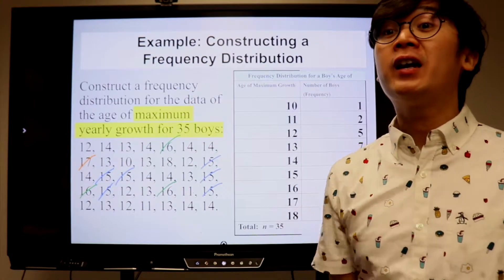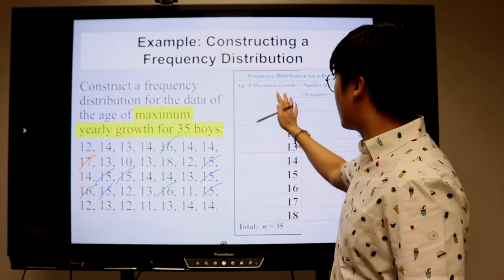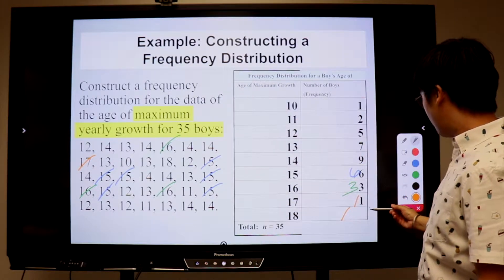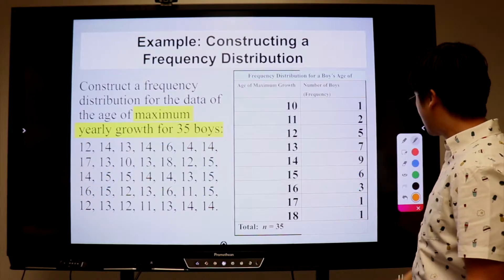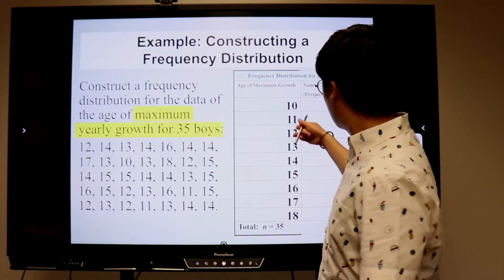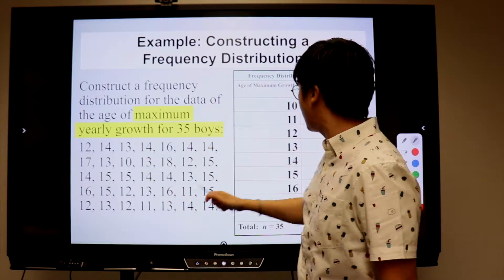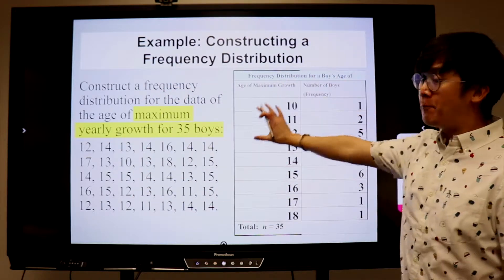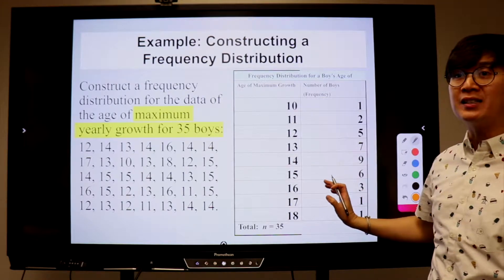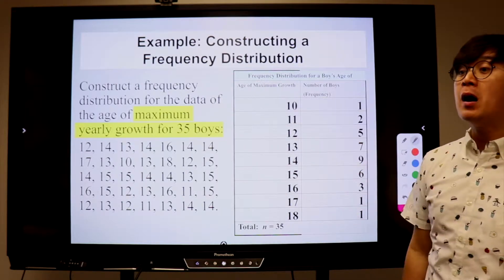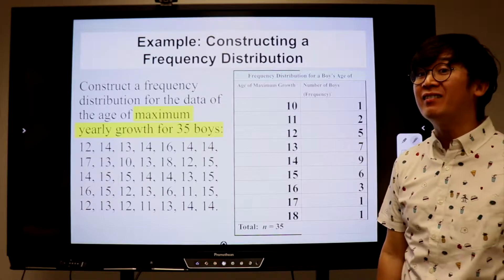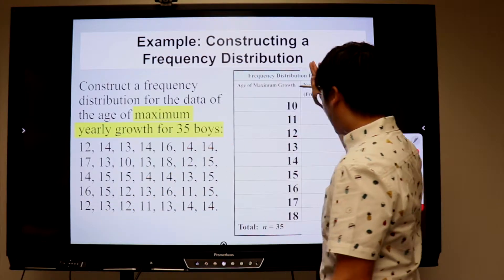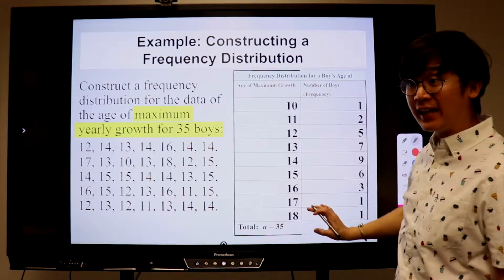Now that we have organized the number of frequencies in our frequency distribution table, we have results for each age group. You accurately counted the number of 10-year-olds, 11-year-olds, and so on in this data set. The importance of our frequency distribution table is that we can use this to come up with our first statistical graph. This was ungrouped data, and now we have a more organized data set.